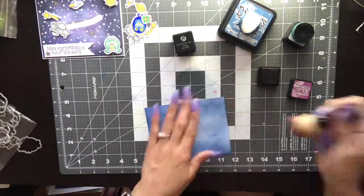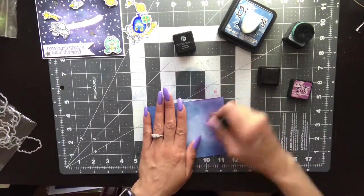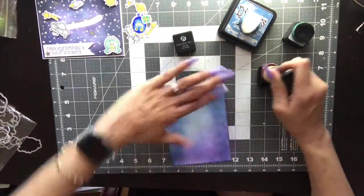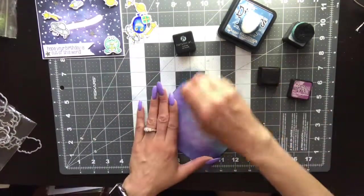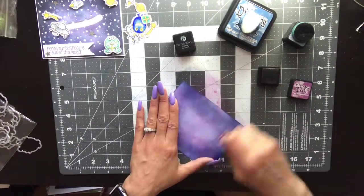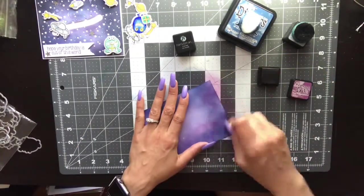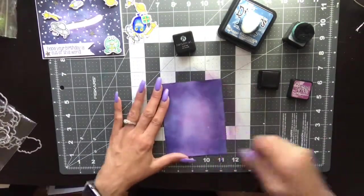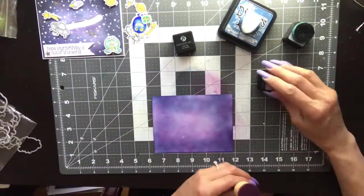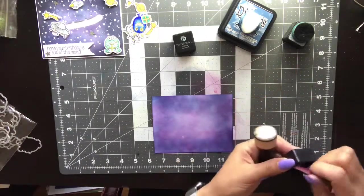Next I'm gonna go in with the Seedless Preserves and this is just gonna give it a little break in that blue tone. I'm going very gingerly and then again going across the center just to break up that blue.